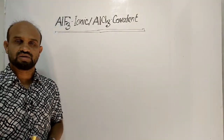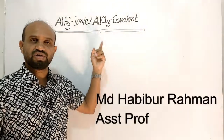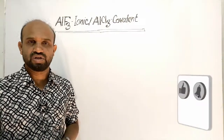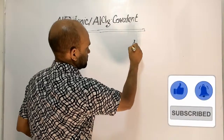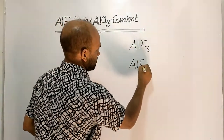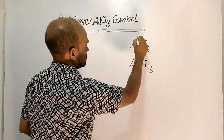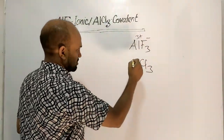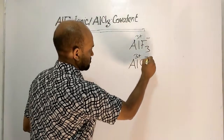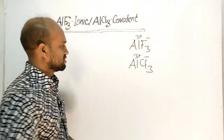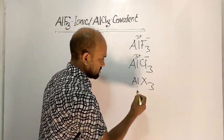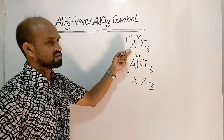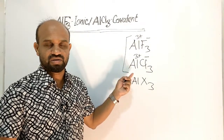Aluminium fluoride is ionic in nature and aluminium chloride is covalent in nature — what is the reason behind this? In both compounds, the cationic charge is 3+ and the anionic charge is minus. Since both compounds have aluminium and a halogen, both should behave the same, but one is ionic and the other is covalent in nature.